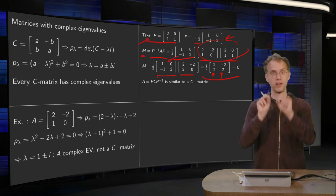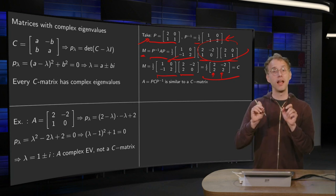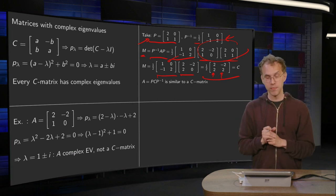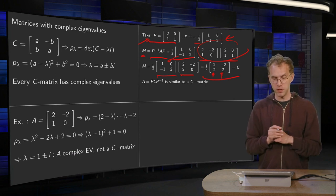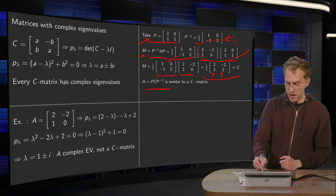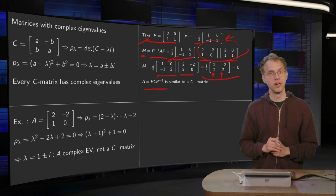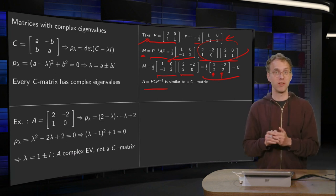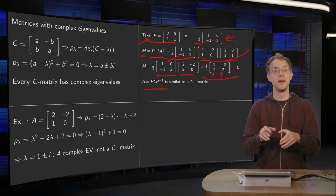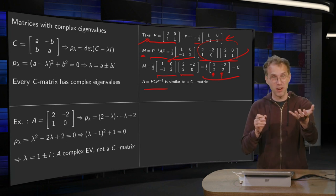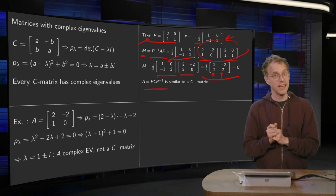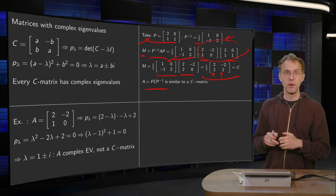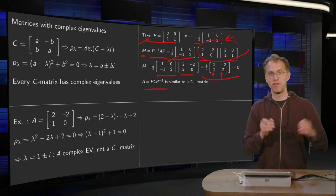All of a sudden we have a scaling rotation matrix, because the numbers on the diagonal are the same and the numbers off the diagonal are the same up to sign. So in fact we have C = P⁻¹AP, or equivalently A = PCP⁻¹. So this A with complex eigenvalues is not itself a C matrix, but A is similar to a C matrix — in another basis it is in fact a scaling rotation matrix.